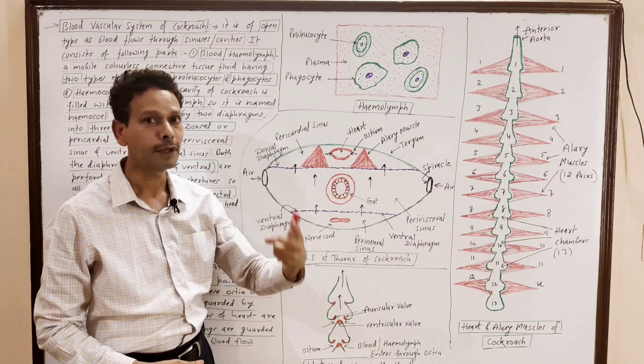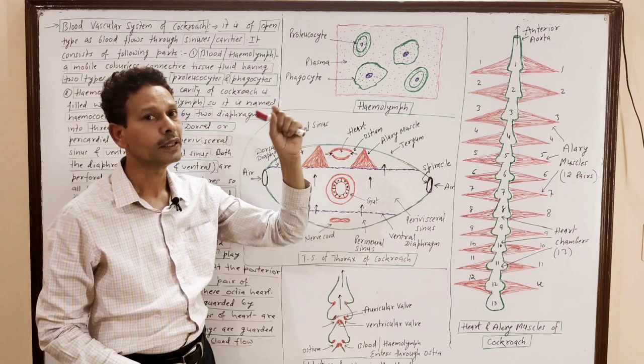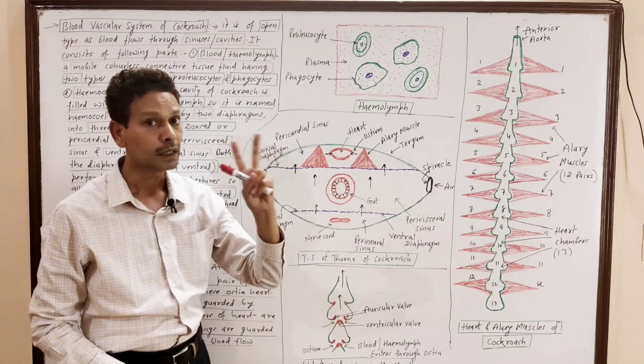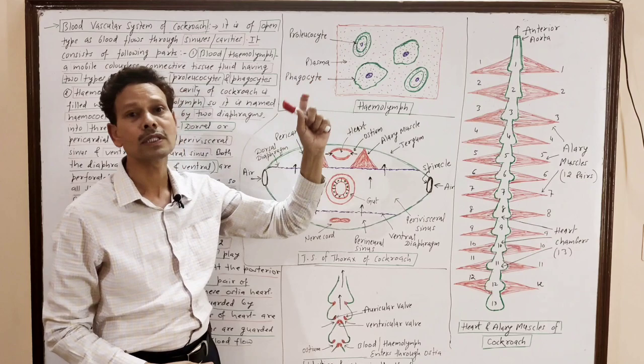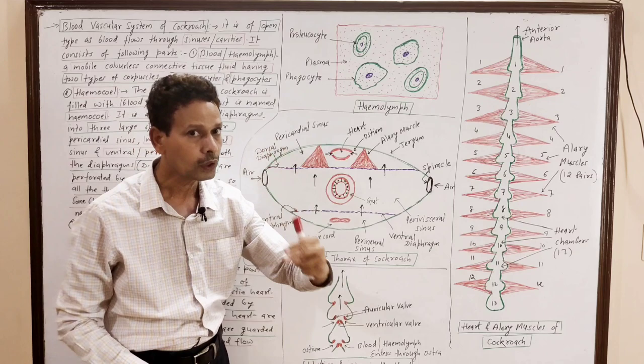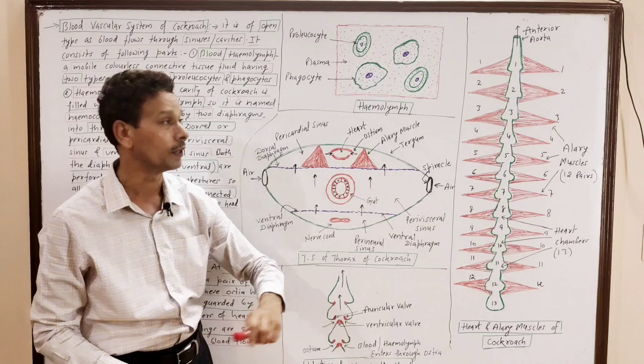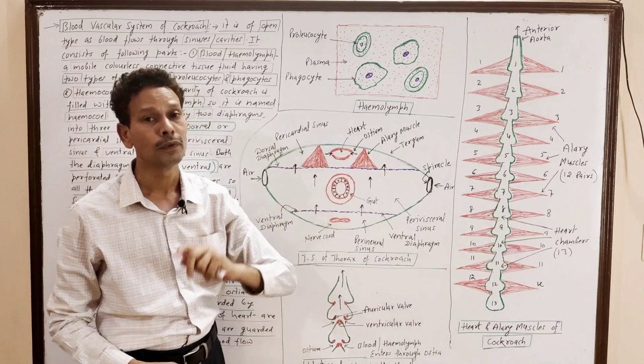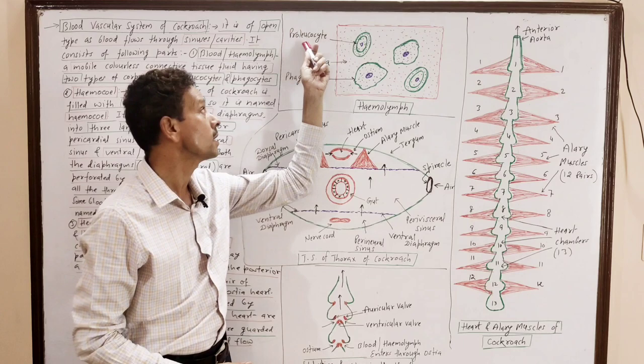The blood has two components. The fluid component is plasma. In this plasma, two types of cells — corpuscles — are present. There are no RBCs. The corpuscles are WBCs: proleukocytes and phagocytes, which are involved in the defense mechanism.